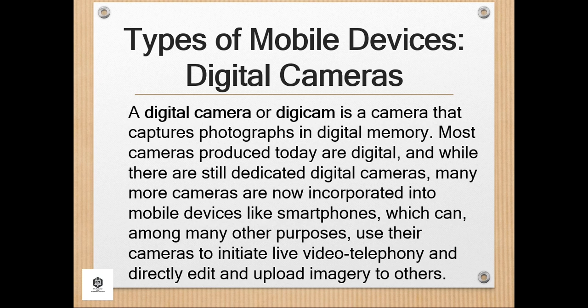However, unlike film cameras, digital cameras can display images on a screen immediately after being recorded and store and delete images from memory. Many digital cameras can also record moving videos with sound. Some digital cameras can crop and stitch pictures and perform other elementary image editing.